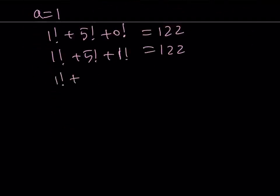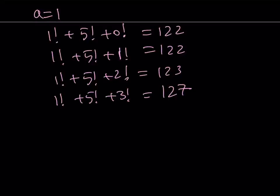And then 1 factorial plus 5 factorial plus 2 factorial. That is going to give you 123. And then we'll increase it a little bit more. Then that's going to give us 127. So, again, this is not going to work. Why? Because 153 is not 127. So those digits don't match. So none of these will be a solution.